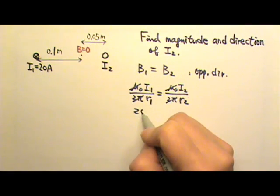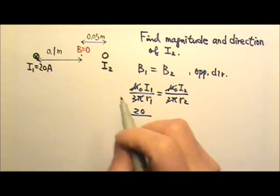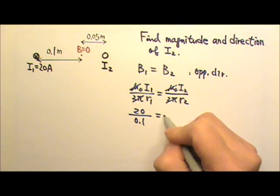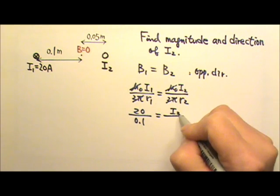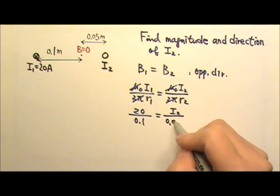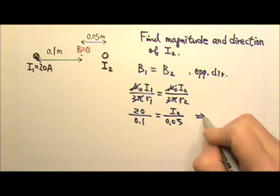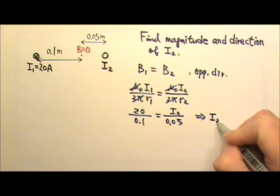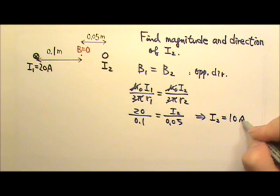I1 is 20, the distance is 0.1 meter. I2 we do not know, and R2 is 0.05 meters. So if we cross multiply and solve for I2, which is 10A.